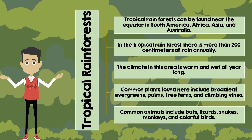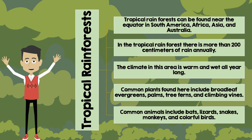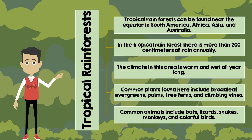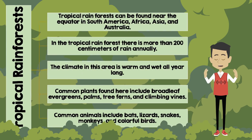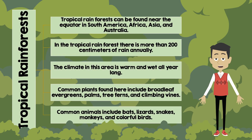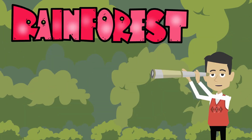Tropical rainforests can be found near the equator in South America, Africa, Asia, and Australia. In the tropical rainforest, there is more than 200 centimeters of rain annually. The climate in this area is warm and wet all year long.